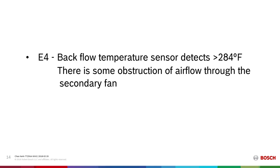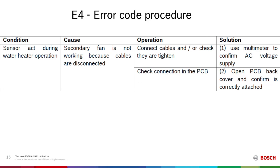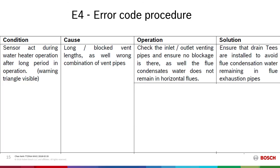E4 is not related to combustion, but is related to airflow. E4 says the backflow temperature sensor detects a temperature over 284 degrees. Something is obstructing airflow through the secondary fan. During operation, if the secondary fan is not turning because it has become disconnected, error code E4 will be produced. Confirm that the power cables and ground are connected to the secondary fan. If during operation an E4 is produced after extended operation, this is possibly related to a blocked vent, an over-length vent, over-length intake, or blocked intake.